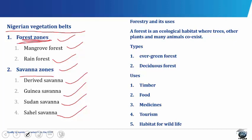Forest zones: The forest vegetation is found in the southern part of the country. The mangrove forest is found in swamps of the coastal creeks, the estuaries and lagoons of southern Nigeria. The types of trees found there are the red and white mangroves, palm trees and the lianas — that's the climbing and twining plants. Examples of animals found in this forest are fish, snakes, crocodiles and birds.